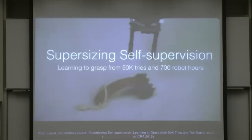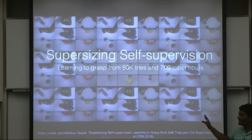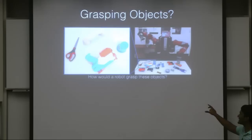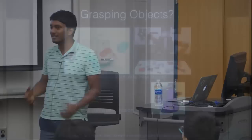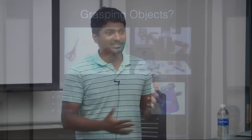So this is the ICRA paper. It's called Supersizing Self-Supervision. In this paper, we learn how to grasp objects by attempting around 50,000 trials, and we have our robot running for around 700 hours. Quick motivation: let's say you have a robot with a table in front of it and objects on the table — how would you grasp them? The traditional way is to use analytical methods, which require 3D models of the object, fitting those models to sensory observations, and then using physics-based analysis to determine how to grasp.